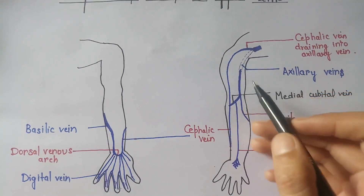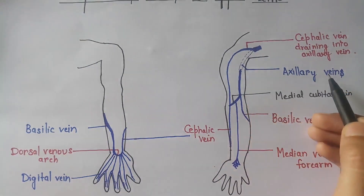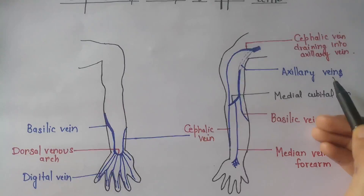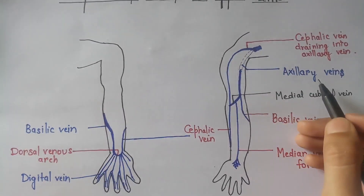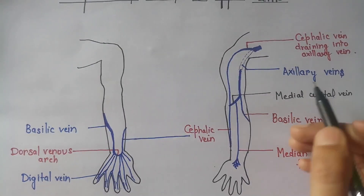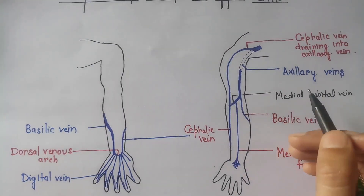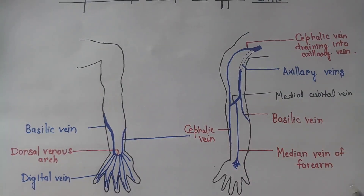As it runs upward, the basilic vein becomes the axillary vein at the lower border of teres major.